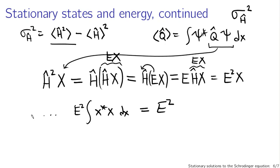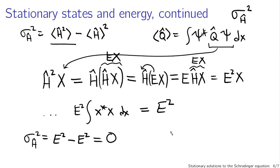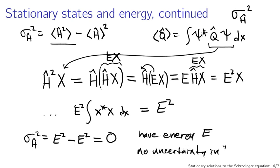So the expectation of Ĥ² is E². Therefore the variance σ²_Ĥ = E² − E² = 0. Stationary states that solve the time-independent Schrödinger equation have energy given by the separation constant E and zero uncertainty in energy. They essentially have exactly E amount of energy.